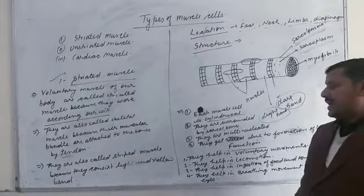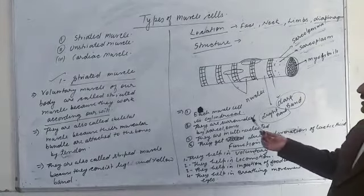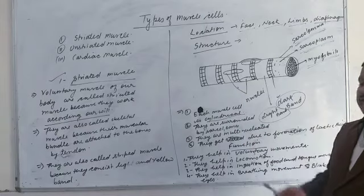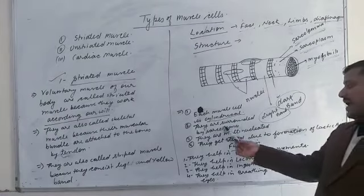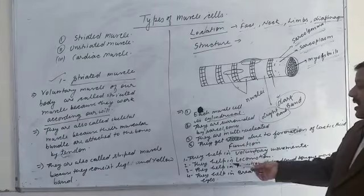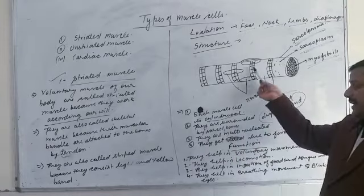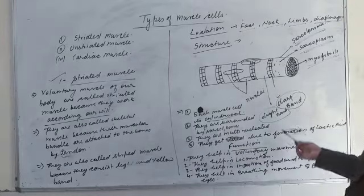So each muscle cell is cylindrical inside. They have sarcolemma, they are multinucleated, and they can generate heat.